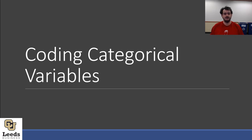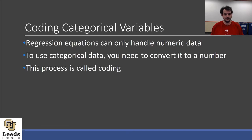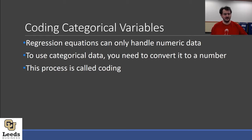In the last video, I mentioned that we were just going to gloss over what sex equals 0 or sex equals 1 means. Now we're actually going to talk about that. What that is, is it's called coding. Regression equations can only handle numeric data. You couldn't multiply 0.4 times red in any direct or meaningful way, so instead you need to find a way to turn the category into numbers. Whenever you do this, it's called coding.